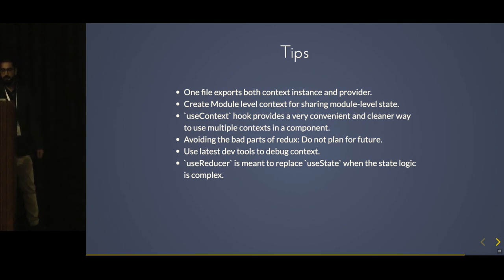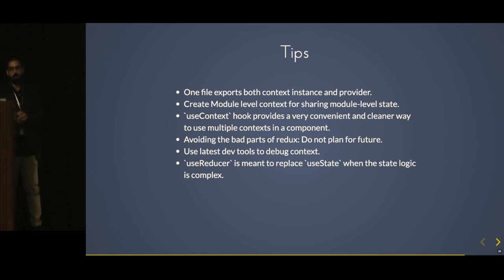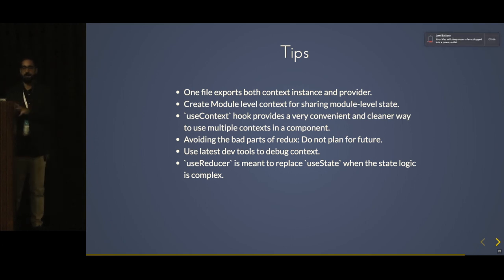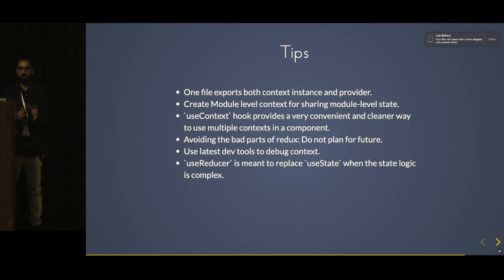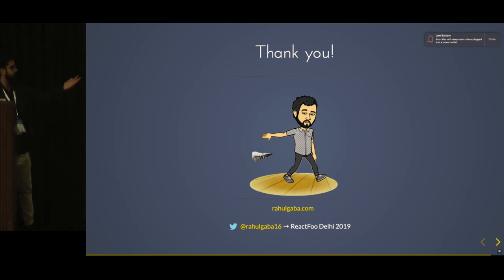Tips: one file exports both the context instance and the provider; create module-level context; use useContext instead of staticContextType in class components; avoid the bad parts of Redux by not over-planning. Update your dev tools — newer dev tools have good integration with React hooks and context, so you can change data and see it reflected in all consumers. useReducer is meant to replace useState when logic gets complex. These are the references I used. Thank you so much — this is my Twitter ID if you want to follow me.